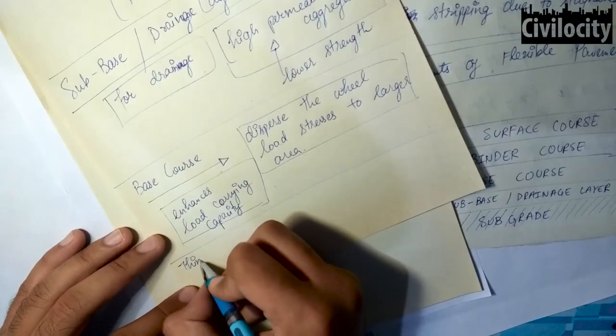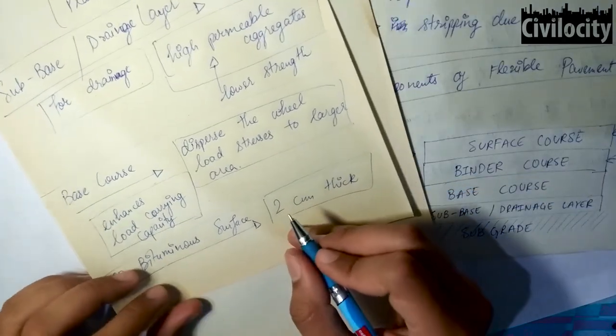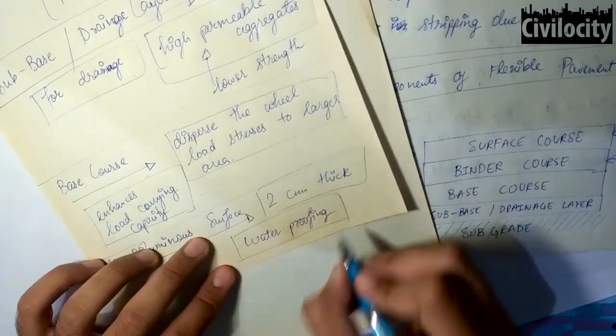Our second layer from the top is the thin bituminous layer. It is 2 centimeter thick layer and it is used to prevent water from entering into the lower layers.